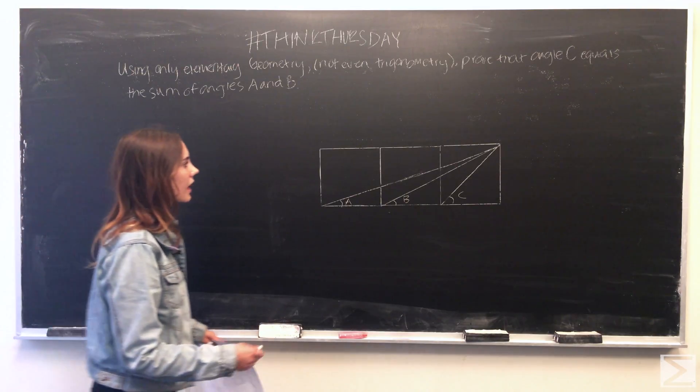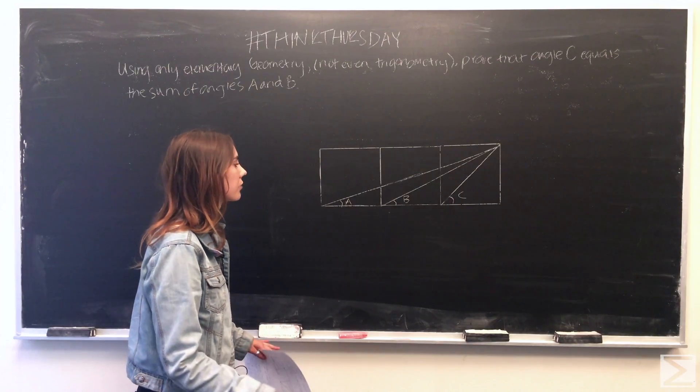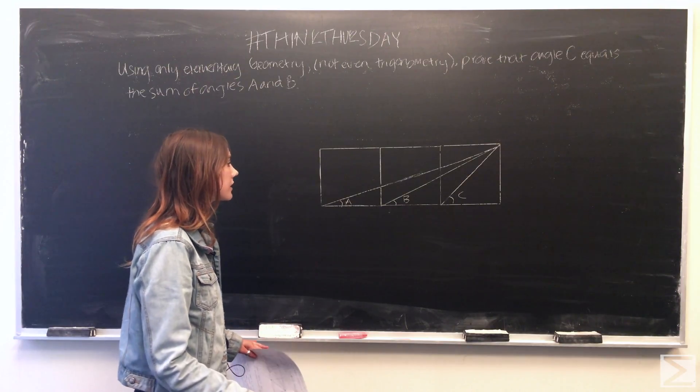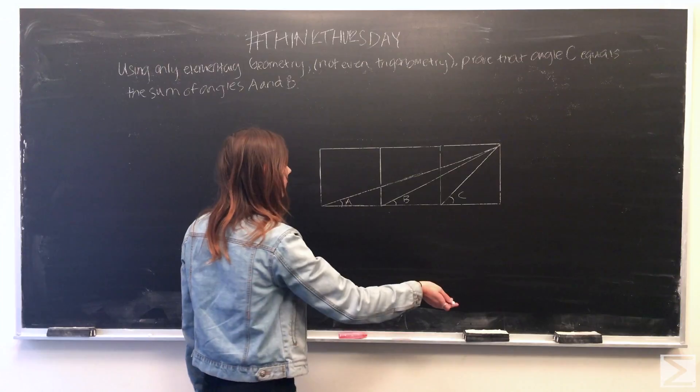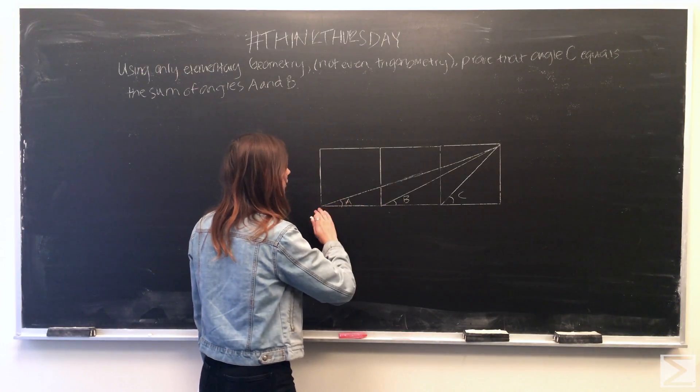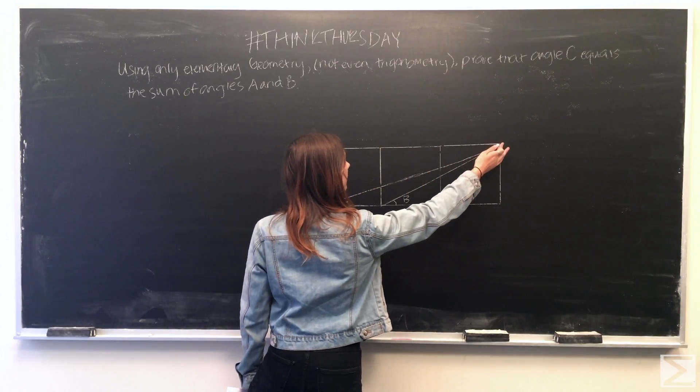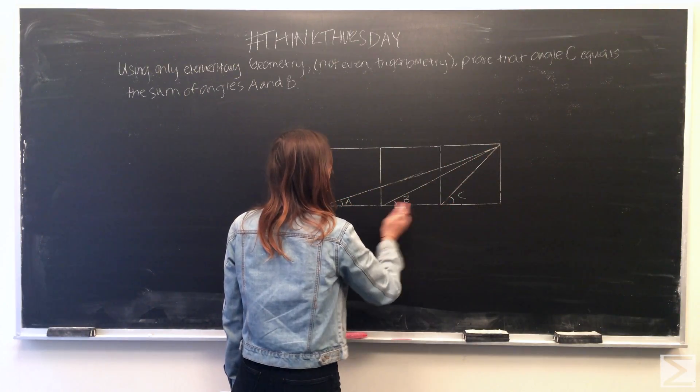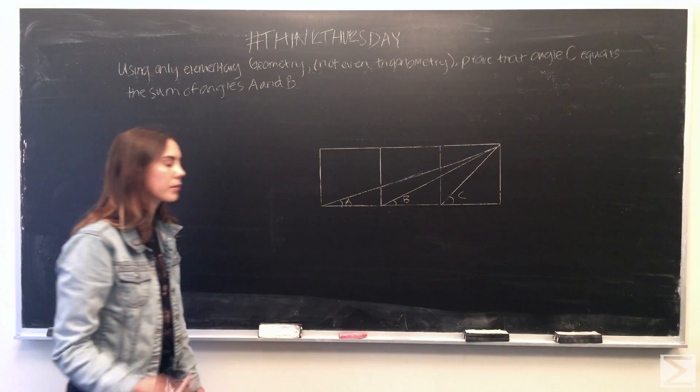So we've drawn the diagram of what the problem statement uses and you can see here we've drawn angle C, angle B, and angle A. All of these angles are basically extensions from the line straight from this corner here to the different corners of each perfect square.